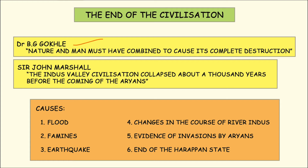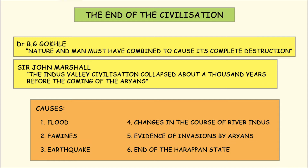On the other hand, Sir John Marshall was of the view that the Harappan civilization ended a thousand years before the coming of the Aryans. The Aryans came to India around 1500 BC, and with their coming the Rig Vedic period started. Not only these two scholars, but a number of others have put forward different views — including floods, famines, earthquakes, changes in the course of the river Indus, evidence of invasion by Aryans, and the end of Harappan culture.